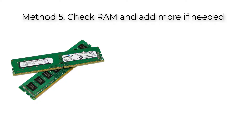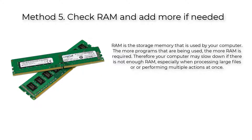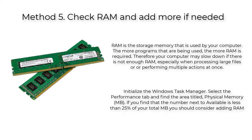Method 5: Check RAM and add more if needed. RAM is the storage memory used by your computer. The more programs that are being used, the more RAM is required. Your computer may slow down if there is not enough RAM, especially when processing large files or performing multiple actions at once.